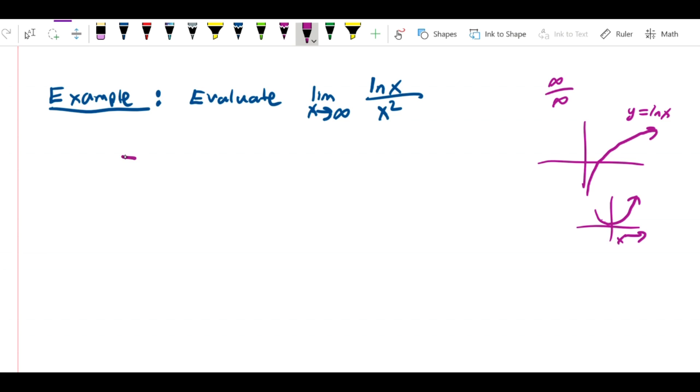We can therefore evaluate it by L'Hopital's rule. This is equal to the limit as x approaches infinity of the derivative of ln x is 1 over x, and the derivative of x squared is 2x.